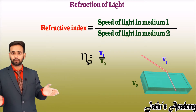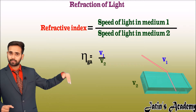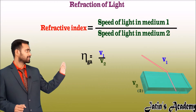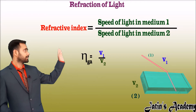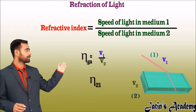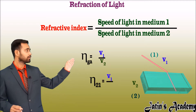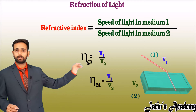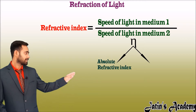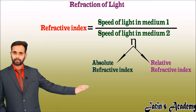So refractive index is a ratio of the speed from where it is coming (v1) to where it is going (v2). Generalizing the term, taking glass as medium 2 and air as medium 1, the refractive index of medium 2 with respect to medium 1 is the ratio of velocity in medium 1 to the velocity in medium 2.